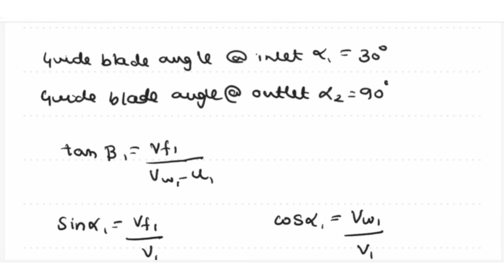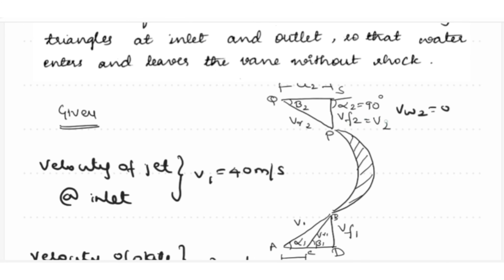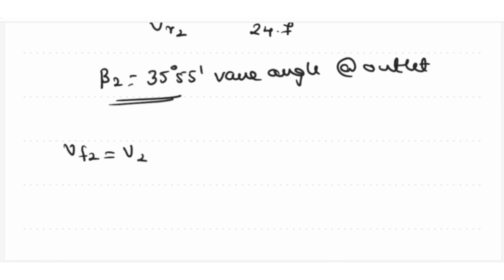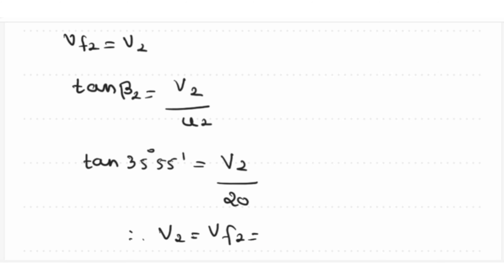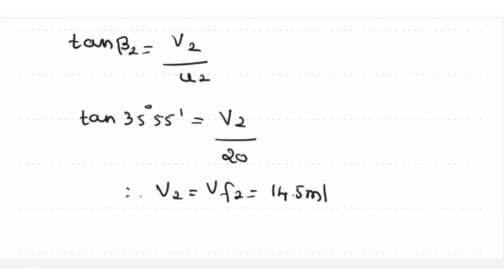We can also calculate vf2, which equals v2. Applying tan theta: tan beta 2 equals v2 divided by u2, so tan 35 degrees 55 minutes equals v2 divided by 20. Therefore vf2 equals v2 equals approximately 14.5 meter per second. With this, we have calculated all the components of the inlet and outlet velocity triangles.